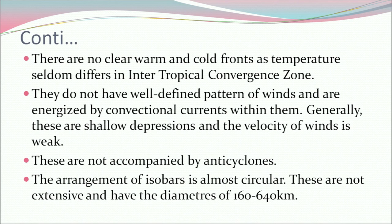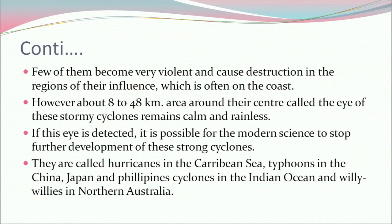Generally, these are shallow depressions and the velocity of winds is weak. They are not accompanied by anti-cyclones. The arrangement of isobars is almost circular. They are not extensive, having a diameter of about 160 to 650 km. A few of them become very violent and cause destruction in the regions of their influence, which is often on the coast. However, about 8 to 48 km around their center — called the eye of the cyclone — remains calm and rainless. If this eye is detected, it is possible for modern science to stop further development of these strong cyclones.